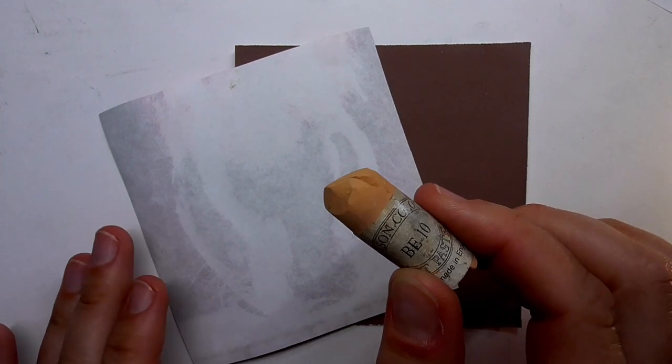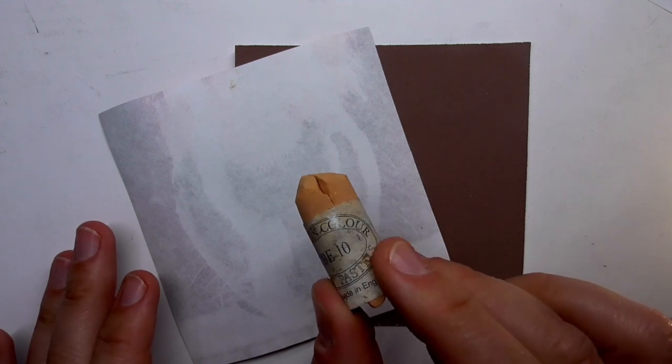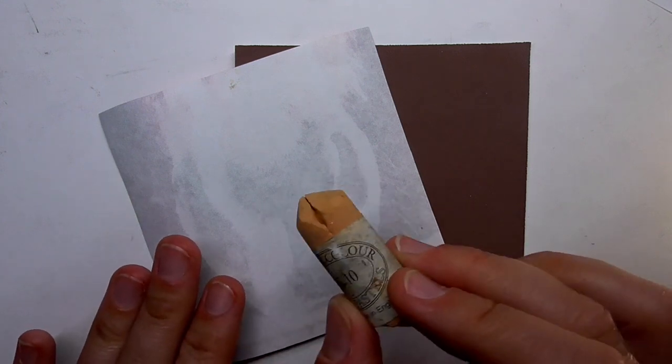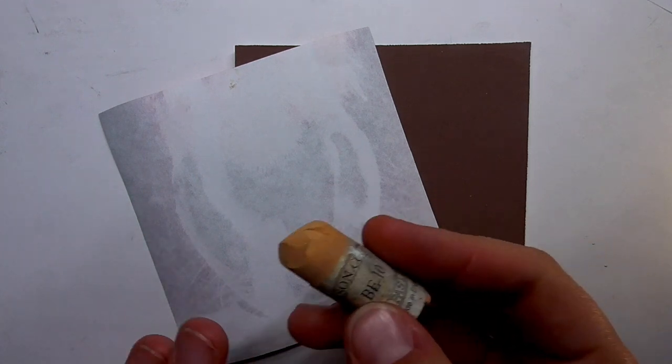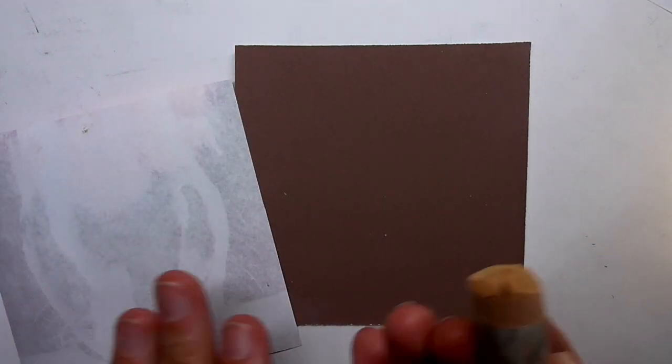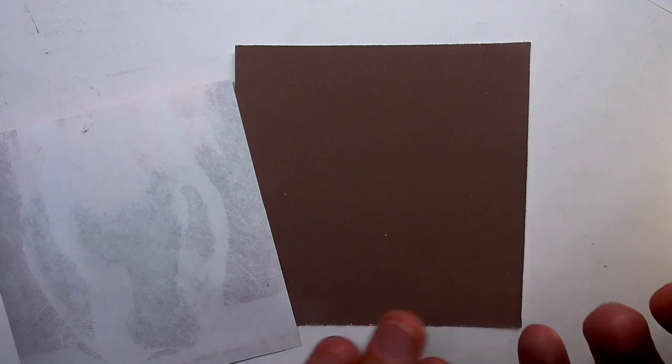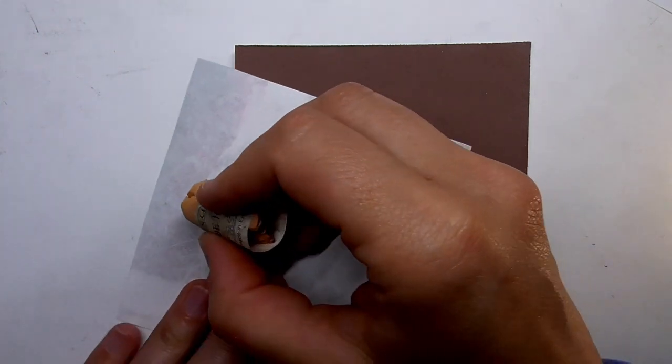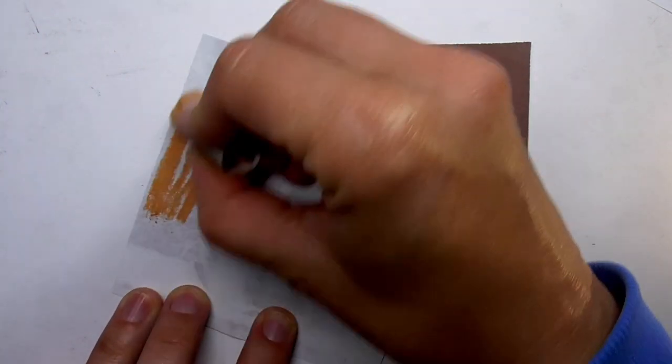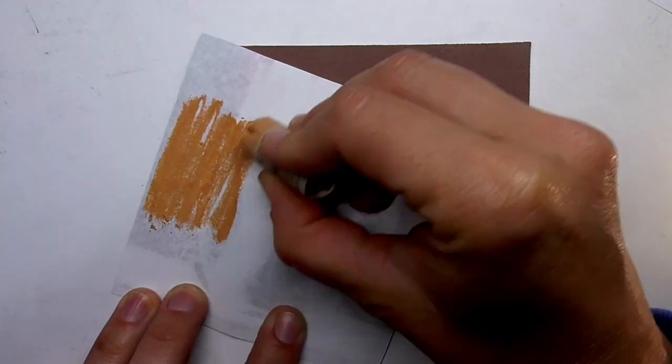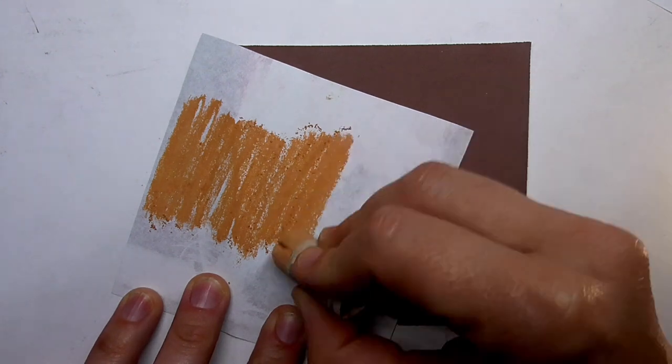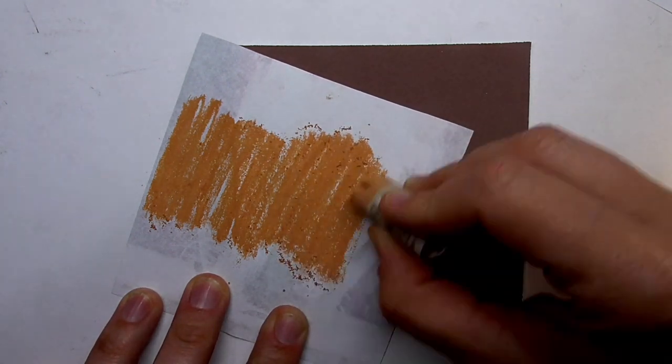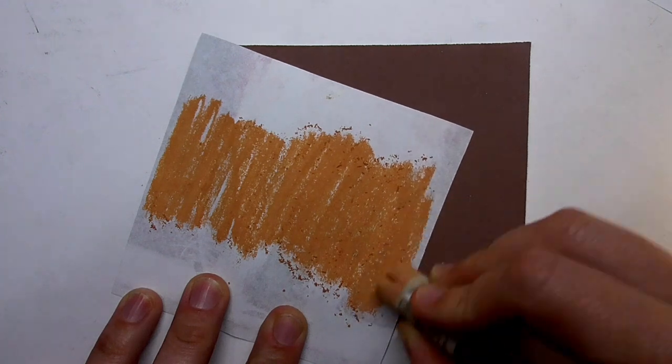I use a soft pastel stick like this Unison color. It's a skin color. You can use white too or any lighter color than your paper color. And then just apply a layer here on the back side of the printout, so of the printed reference photo. Just apply here this soft pastel pigment.